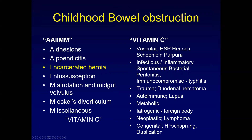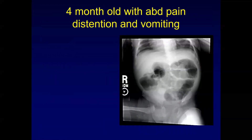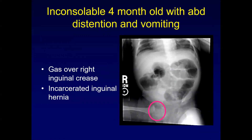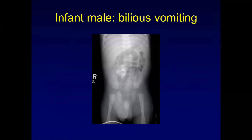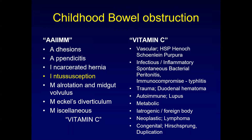Incarcerated inguinal hernias occur when bowel is non-reducible to its original or normal location. Here we can see gas overlying the right inguinal crease, consistent with an incarcerated inguinal hernia. A plain film demonstrates an abnormal bowel gas pattern with a soft tissue rounded mass density over the region of the umbilicus and asymmetry of the inguinal folds, as demarcated by the yellow highlight. This patient went to surgery for a bowel-containing incarcerated hernia. Ultrasound can at times be helpful for further evaluation or justification as needed.